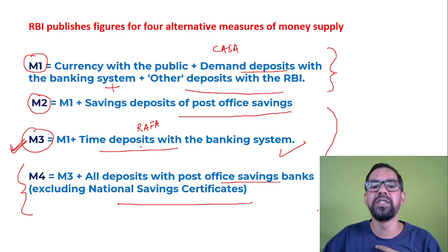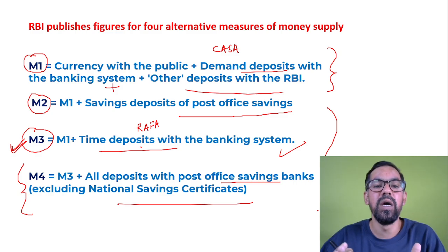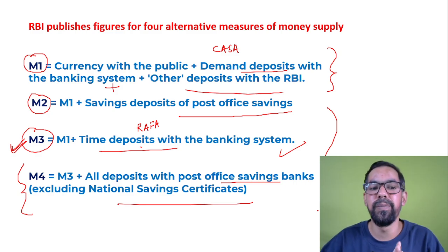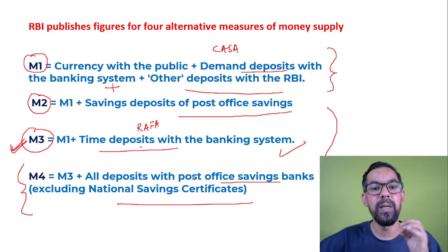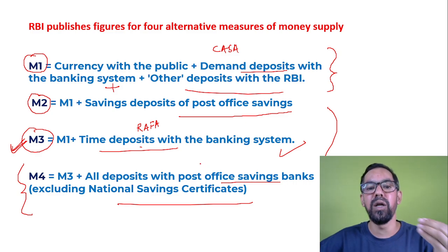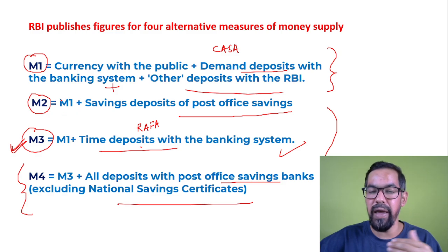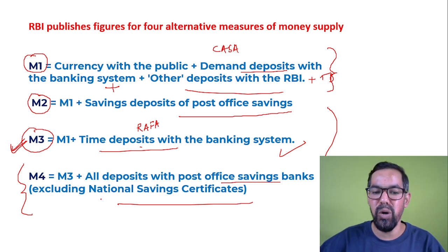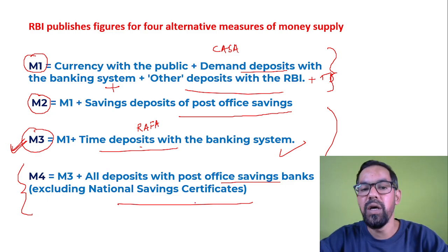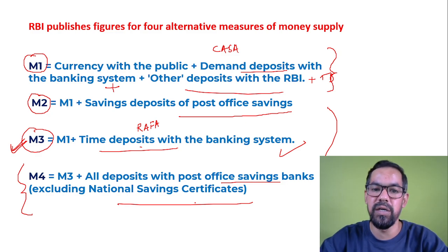These are the measures used by RBI to check the overall money supply in the economy. Whenever RBI presents data about money supply, they use all four measures in four different categories. To recap: M1 is currency with the public plus demand deposits; M2 is M1 plus savings deposits with post office; M3 is M1 plus term deposits; M4 is M3 plus all deposits with post office.